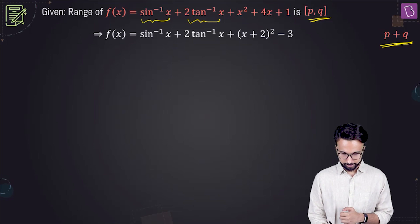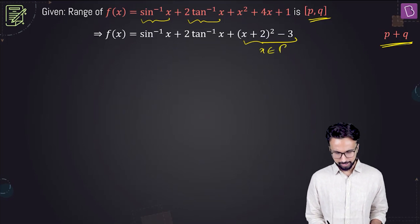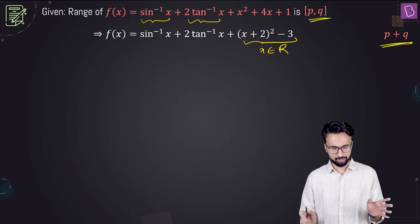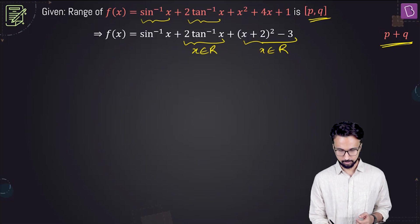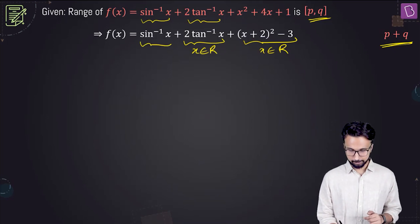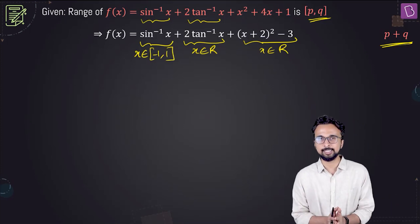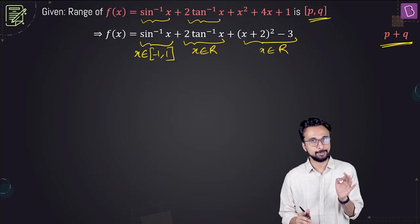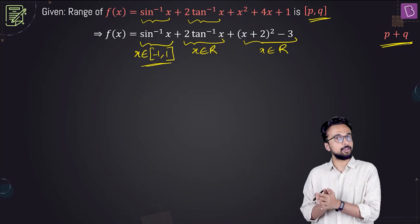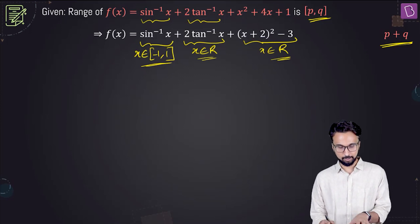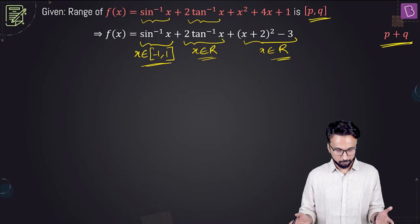To find the domain: the quadratic term and 2 tan inverse x accept any real x, but sine inverse x requires x between minus 1 and 1. So the domain of the entire function is x between minus 1 and 1. Now at x equals minus 1 and x equals 1, we check whether the function takes its minimum and maximum values respectively.